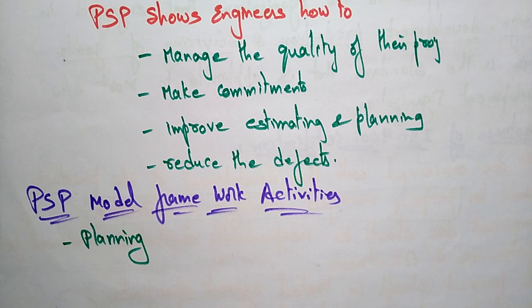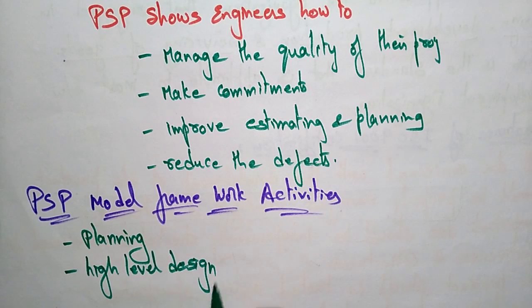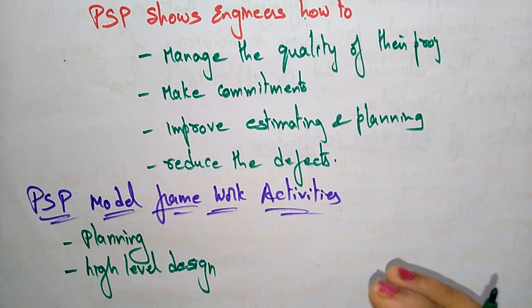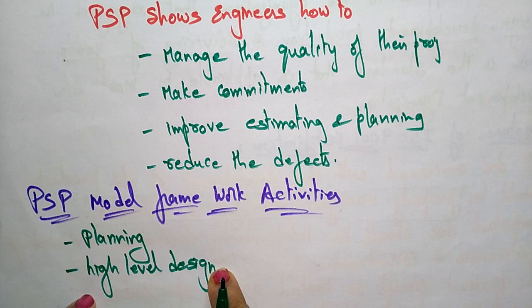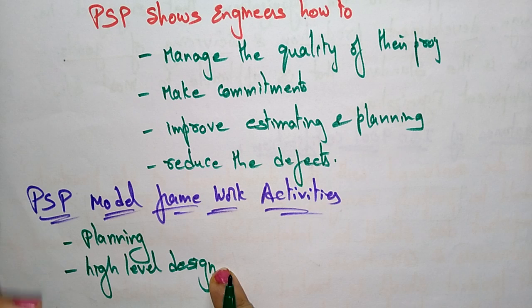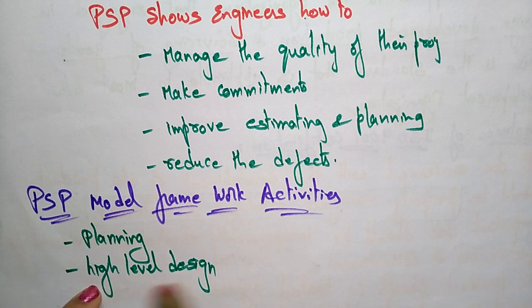After planning, the next activity is High Level Design. This involves considering the external specification of all components. Both internal and external specifications are addressed, and all issues that occur during design or tracking are recorded and tracked within the High Level Design.